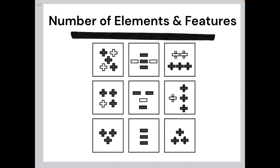In this example, the number of shapes is governed by the logic of our rows and columns. Looking at the rows, the same number of shapes is present in each element throughout the entire row. In the top row there are five shapes in each element, in the middle row there are four, and in the bottom row there are three.